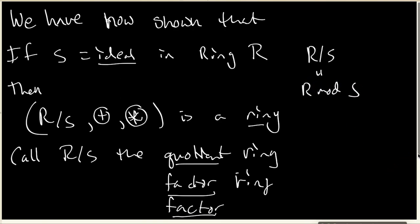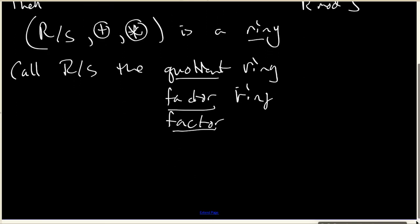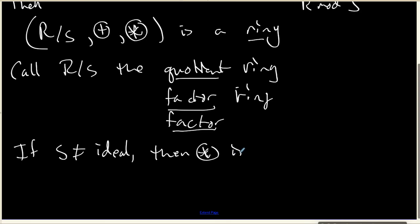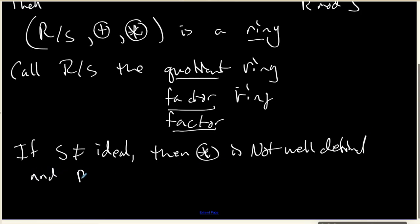A final comment: if S is not a full-fledged ideal, then coset multiplication is not well defined, and that means R mod S is not a full-fledged ring. We have to have an ideal in order to make a quotient ring.